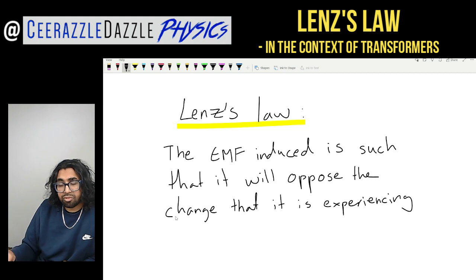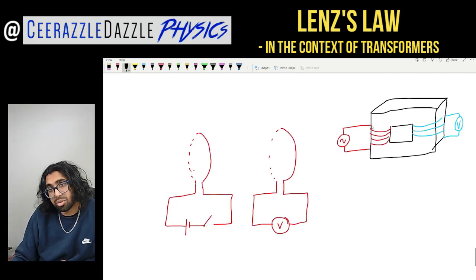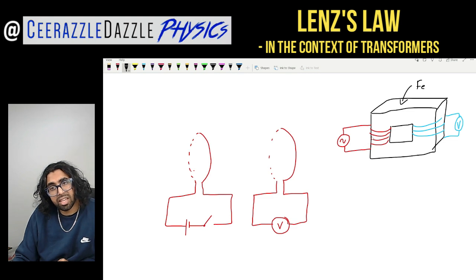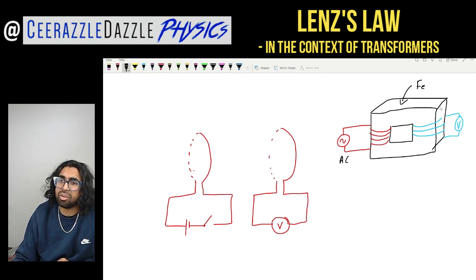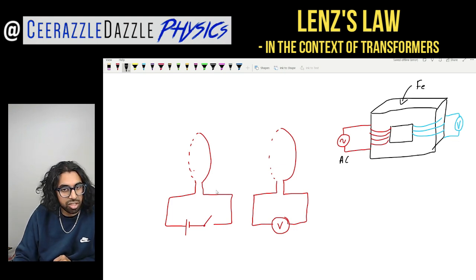Now we're going to look at Lenz's Law in the context of transformers. On the right-hand side you can see a transformer — this is the iron block, here's the primary coil, and here's the secondary coil. The primary coil is connected to an AC supply, and on the right-hand side the secondary coil is connected to a voltmeter. We're going to move from this diagram to a simpler one.